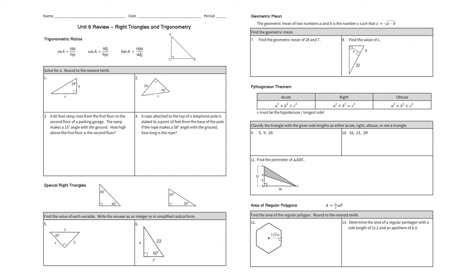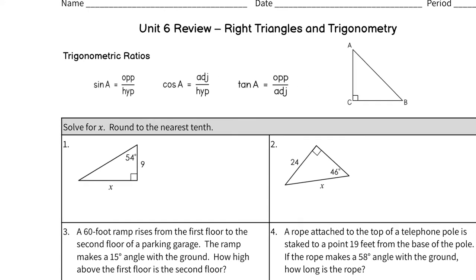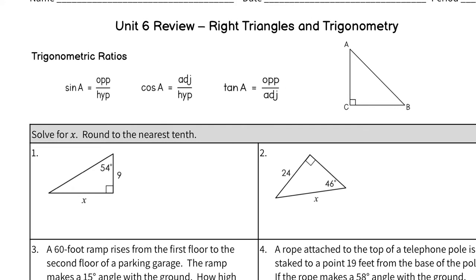I'm going to work my way backwards. The first thing we're going to talk about are the trigonometric ratios: sine, cosine, and tangent. A good way to remember these is SOH-CAH-TOA. The S stands for sine, and O over H is the fraction opposite over hypotenuse. Cosine is adjacent over hypotenuse, and tangent is opposite over adjacent.